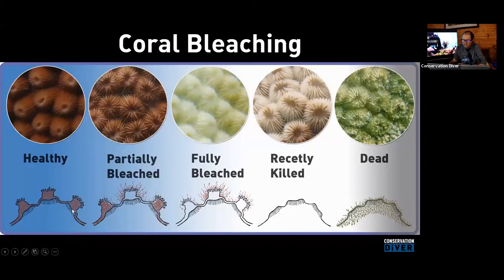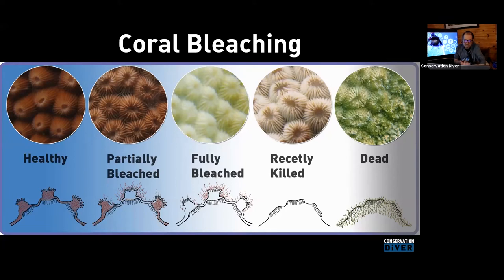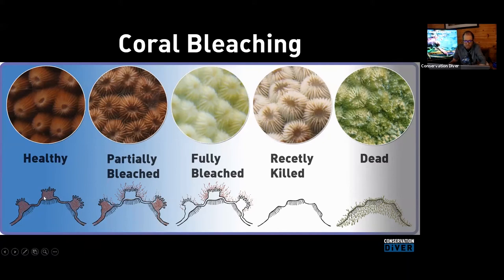Let's talk about coral bleaching. The coral holobiont consists of the coral tissue — a jellyfish-like animal with a limestone exoskeleton — that is full of unicellular algae called zooxanthellae. In a healthy holobiont, these zooxanthellae sit within the coral tissue and provide 70 to 90% of the coral's metabolic energy input, taking energy from the sun and converting it into sugars and lipids for the coral.